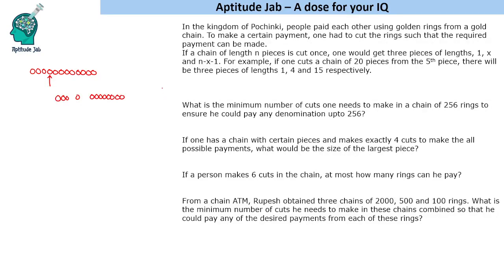Now I can pay using these pieces. If someone asks for one piece, I can pay one. Three pieces - I can pay three. Four pieces - I can pay four. Eight pieces - that can be paid. Nine pieces can also be paid. But if someone asks for six pieces, I cannot pay using these pieces with just one cut.